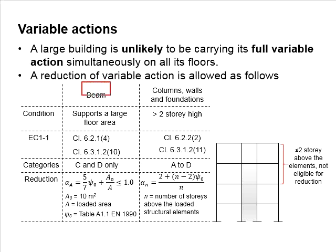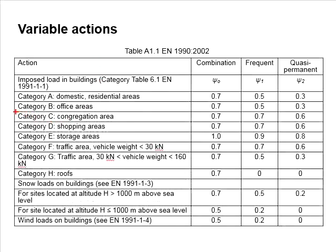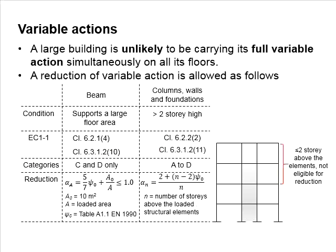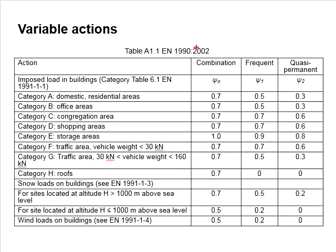The reduction may be applied to the beam when it supports a large floor area. The relevant clause in EC1 is given here, and it is only applicable for Category C and D — the congregations area and shopping areas. The reduction factor for the beam is calculated using the equation shown here, which is a function of A₀ (10 m²) divided by the loaded area, and the combination factor ψ₀.